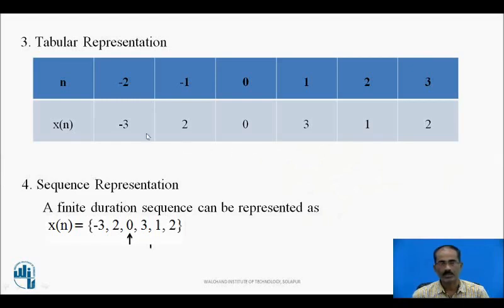Next is tabular representation. In tabular representation, n is in the first row and x(n) in the second row, showing different values of n and the corresponding values of x(n). Next is sequence representation. A finite duration sequence can be represented as x(n) = {-3, 2, 0, 3, 1, 2}, where the arrow indicates the origin of the signal. Values to the right correspond to n = 1, 2, and values to the left correspond to n = -1, -2, -3, etc.